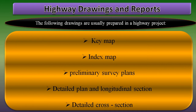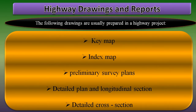The next point is the detailed cross section. This is generally drawn to a natural scale of 1 cm equals 2 to 2.5 meters. Cross sections should be drawn every 100 meters or where there are abrupt changes in level. In hill roads, cross sections should be drawn at closer intervals.